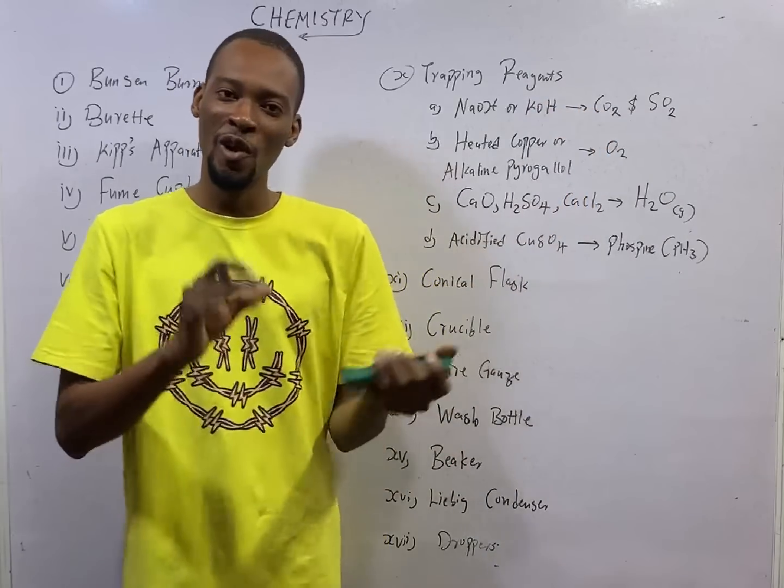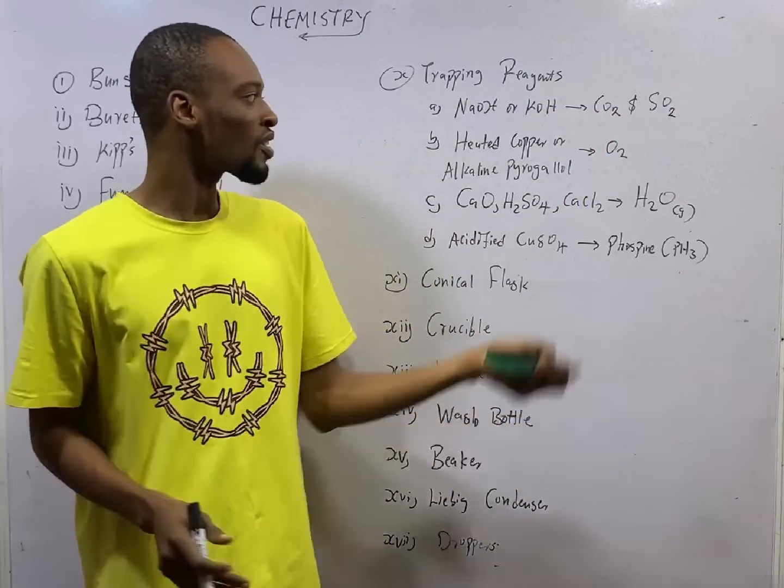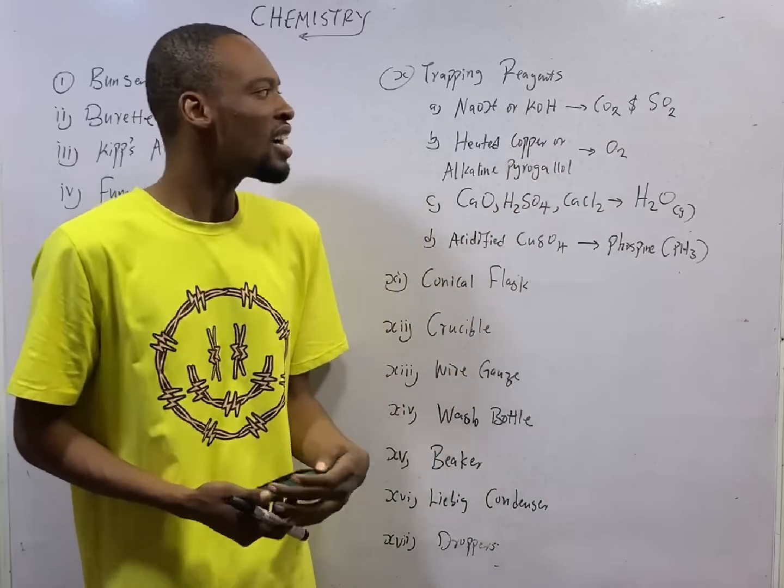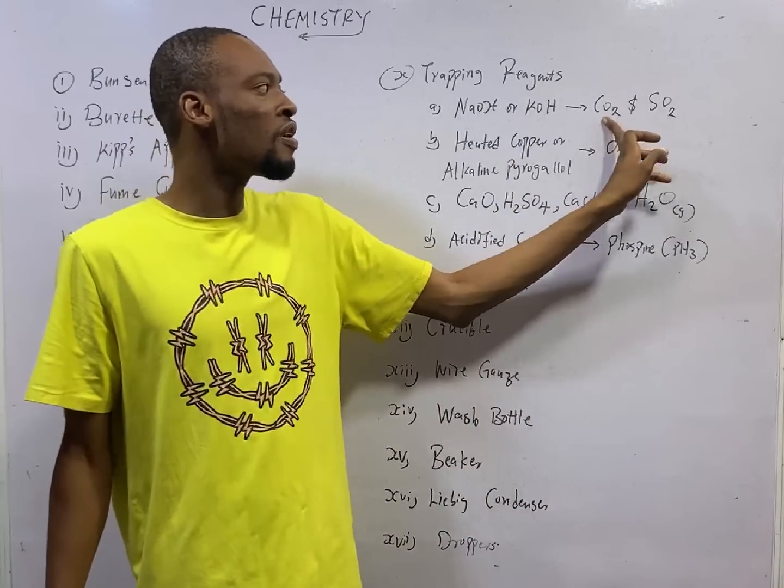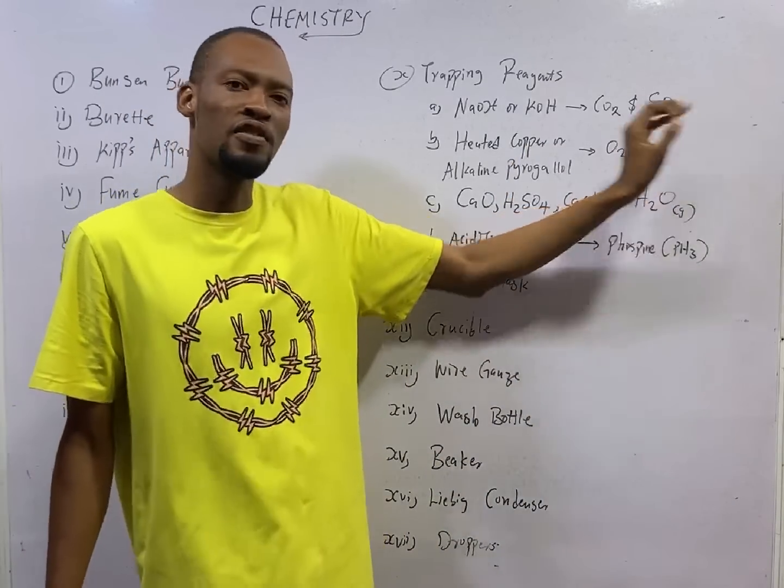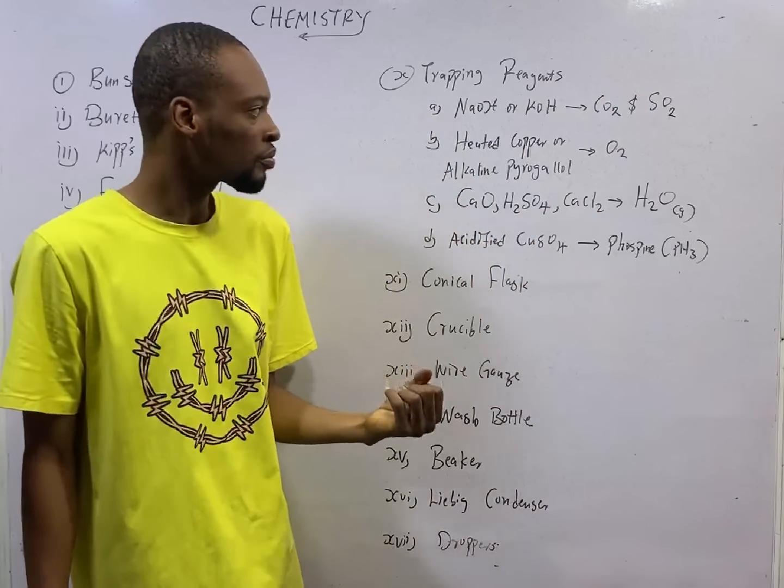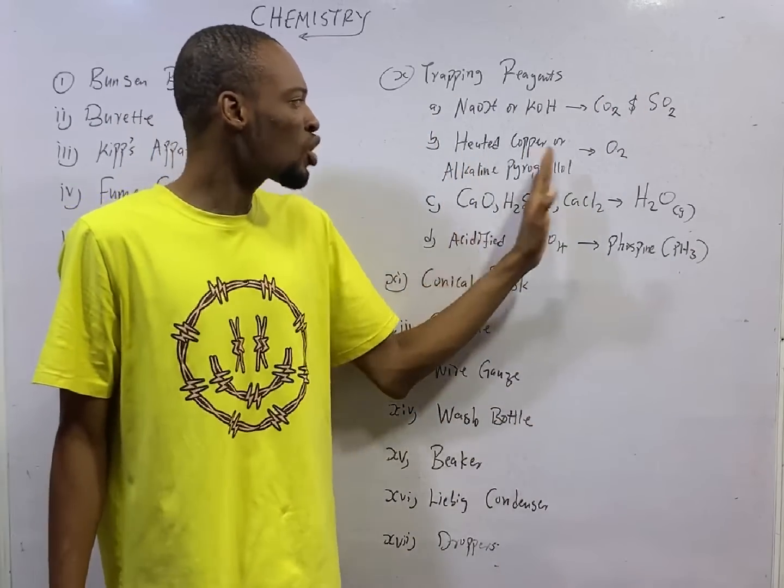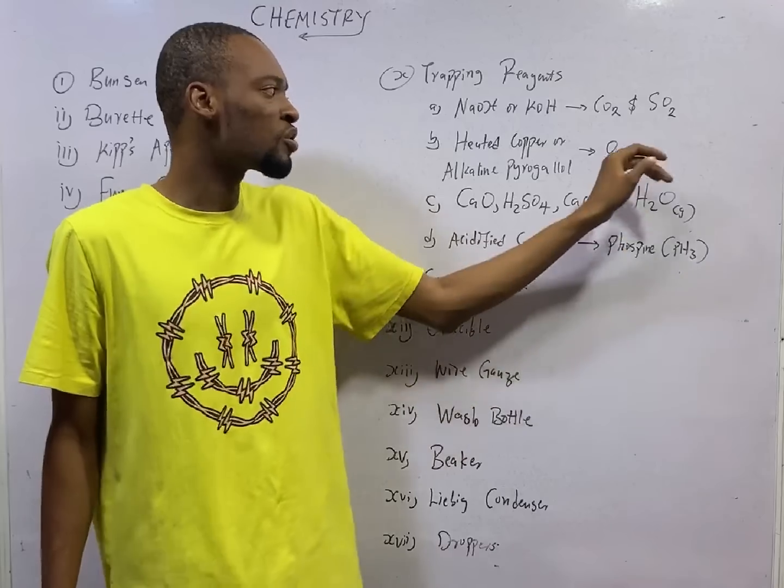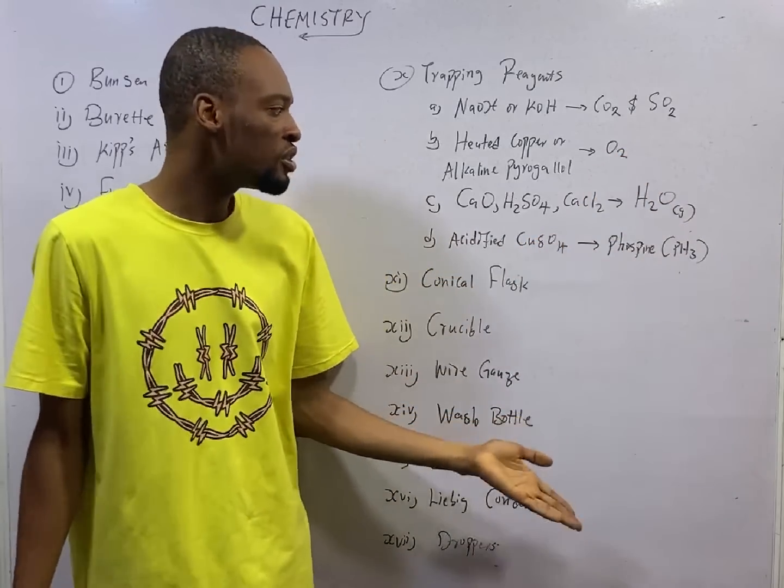While potassium hydroxide, you can call that caustic potash. Caustic soda or caustic potash are used to trap carbon-4 oxide and sulfur-4 oxide from gaseous mixtures. Now, heated copper or alkaline pyrogallol is used to trap oxygen from gaseous mixtures.